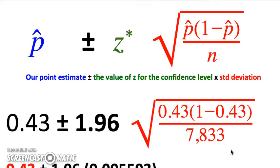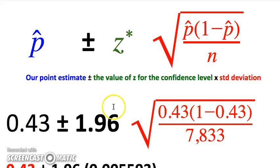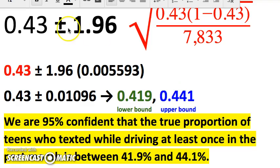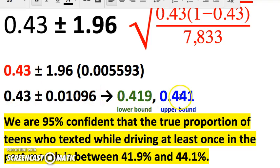Plugging in: p-hat = 0.43, the critical value for 95% confidence is z* = 1.96, and the standard error formula uses p-hat and n = 7,833. Simplifying gives us the standard error. Multiplying 1.96 by the standard error gives the margin of error: 0.01096. Adding that to the point estimate 0.43 gives the upper bound of 0.441; subtracting gives the lower bound of 0.419. We conclude: we are 95% confident that the true proportion of teens who texted while driving at least once in the past month is between 41.9% and 44.1%.